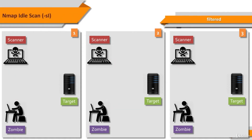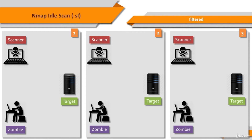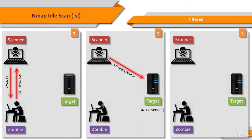Now let's see what happens in an IdleScan if the target port is filtered. The first step is to probe the IPID of the zombie's system. The attacker sends a SYN/ACK to the zombie. Since the zombie does not expect the packet, it sends back a RST with an IPID. The second step is to forge a SYN packet from the zombie to the target system. The target, filtering its port, ignores the SYN that appears to come from the zombie. The zombie is unaware that anything happened, so its IPID remains the same.